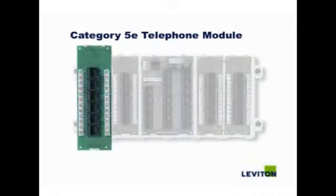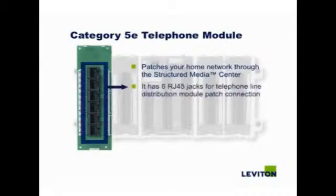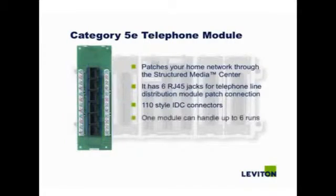This is the Category 5E telephone module. It patches your home network through the Structured Media Center. It has six RJ45 jacks for telephone line distribution module patch connections, with each jack corresponding to a 110-style IDC connector. One module can handle up to six runs and can be daisy-chained for multiple modules.